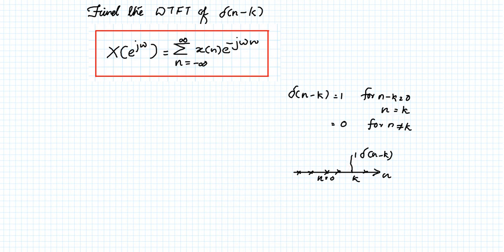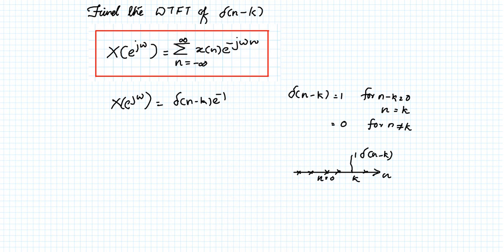Evaluating the summation x(e^jω) = Σ of δ[n−k]·e^(−jωn) from −∞ to ∞: since δ[n−k] is nonzero only when n = k, we substitute n = k, giving e^(−jωk). So the DTFT of δ[n−k] is e^(−jωk).